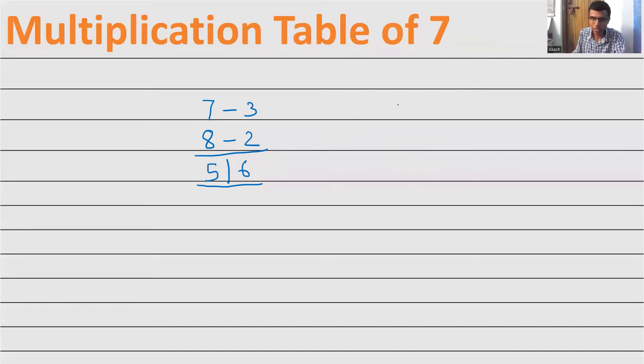What else should I do? I'll take up 7 sixes. Here carry will come. How much is 7 less than 10? 3. How much is 6 less than 10? 4. What's 3 into 4? 12. But remember, only you need to just put 2. 1 will go for the carry. Now what's 7 minus 4? 3. 6 minus 3? 3. 3 plus 1? 4. That's it. 7 sixes are 42.